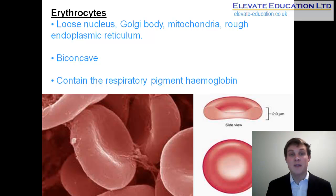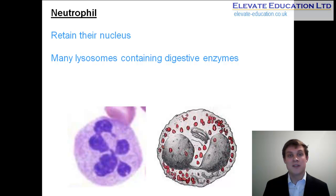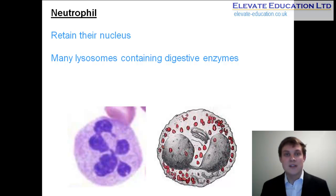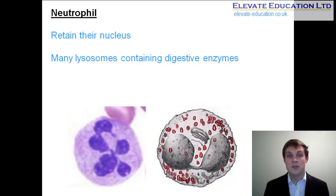The second type of blood cell that can develop from bone marrow is the white blood cell, or neutrophil. Unlike red blood cells, these retain their nucleus and also contain large numbers of lysosomes within the cytoplasm, giving these cells a distinctive granular appearance. Lysosomes are cell organelles that contain digestive enzymes. The role of neutrophils is to engulf and digest microorganisms within the blood, forming part of our immune system. The more lysosomes a neutrophil contains, the more enzymes it has, and the faster it is able to break down invading microorganisms.